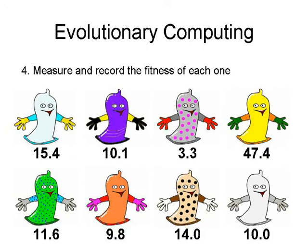The fourth step is to take your population of candidate solutions and subject each one to the fitness function from step two, recording the fitness value each one attains. For example, one condom might get 15.4 while people apparently go bananas for the yellow condom on the right with 47.4 fitness — whatever that number means, maybe millions of dollars in sales or some sort of pleasure rating. You evaluate all members of the population and assign each one a fitness value.